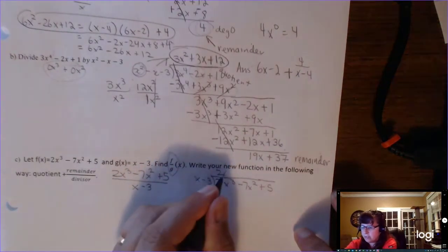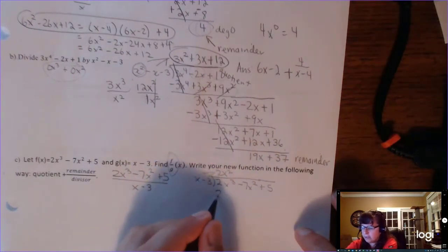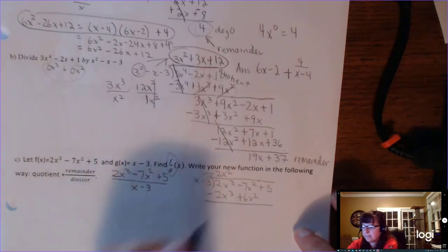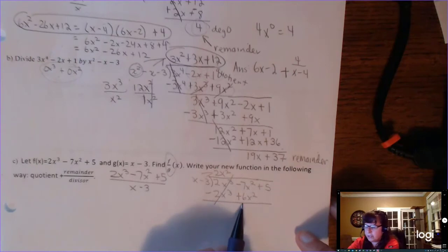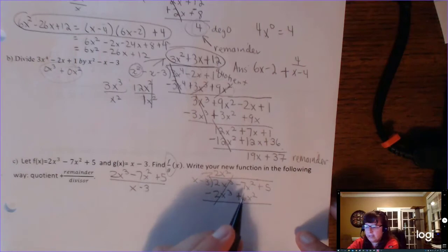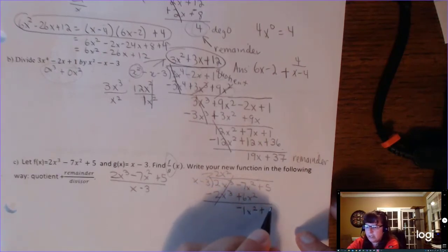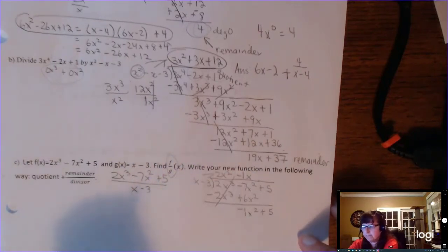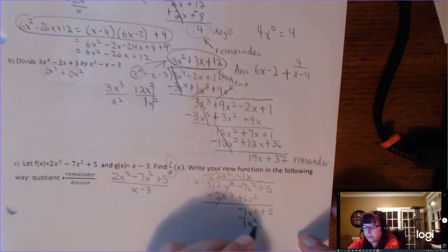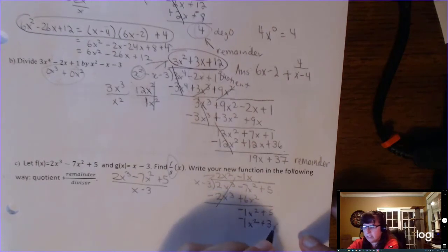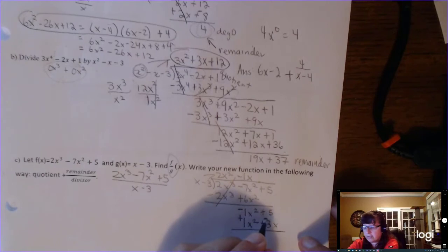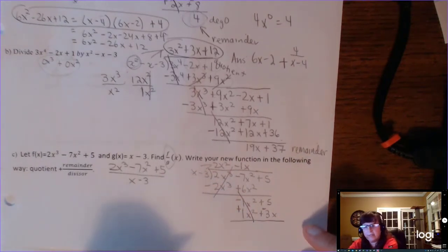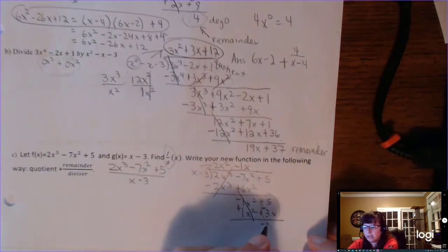2x cubed divided by x is 2x squared. Multiply: 2x cubed minus 6x squared. Draw your line and change the signs — they add to 0. Negative 7x squared and positive 6x squared are like terms, giving negative 1x squared. Bring down the plus 5. Start over: negative 1x squared divided by x is negative x. Multiply back out: negative x squared, and negative x times negative 3 is positive 3x. Draw your line and change the signs. Those cancel. Write the remaining terms in descending order: negative 3x plus 5.